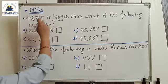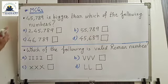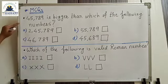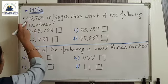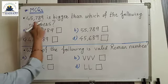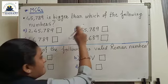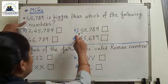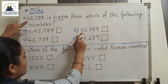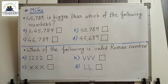Next: 45,789 is bigger than which of the following numbers? We have to compare this number to the given options. First, count the number of digits: 45,789 has 5 digits. Option A has 6 digits, so obviously that number is greater. For option B, also 5 digits — we start from the 10,000 place: 4 versus 5. Since 5 is greater, that number is also greater.